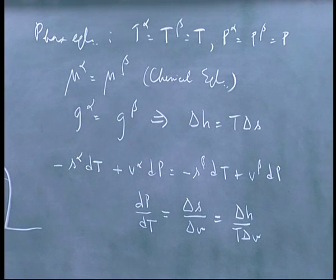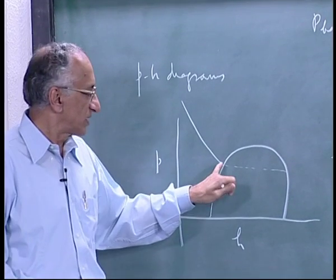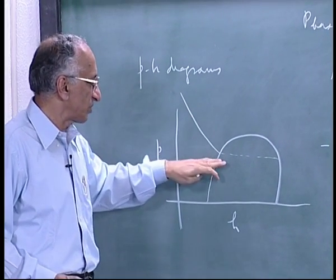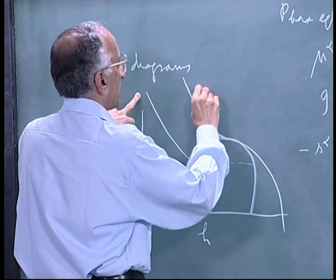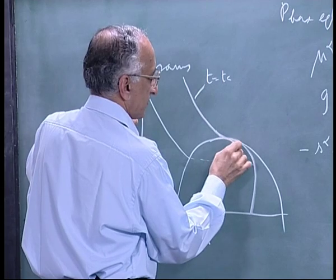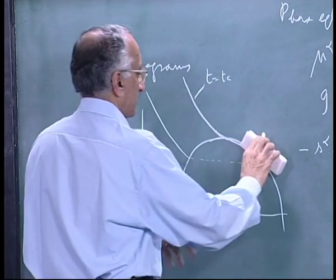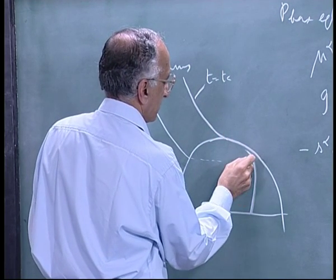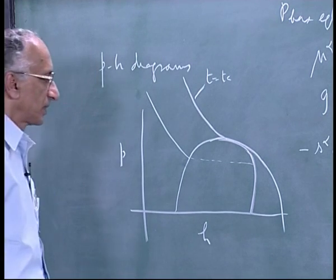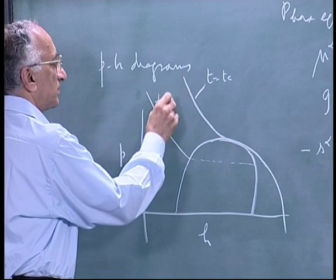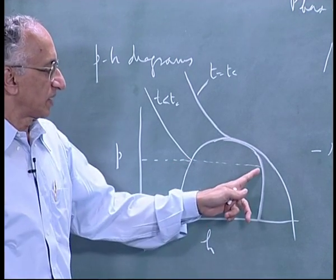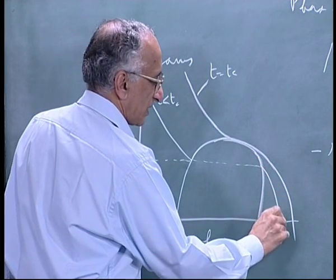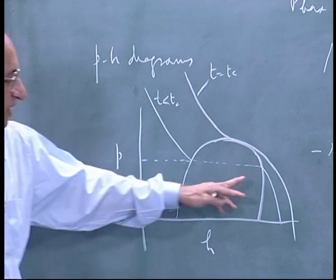The idea is that the pressure becomes related to the temperature by this equation. If you take a substance and lower the pressure at some temperature below the critical temperature, this is T equals Tc. Below Tc you take any isotherm, if you keep lowering the pressure and move along the isotherm, you reach a pressure at which two phases form. Then if you decrease the pressure further, you have the vapor phase here.